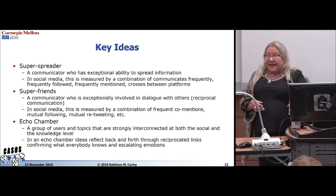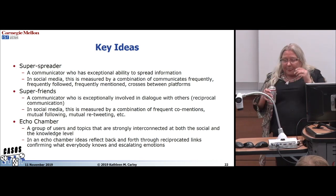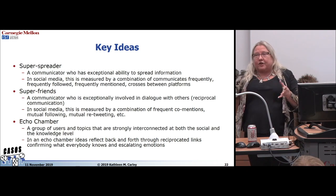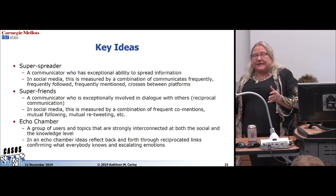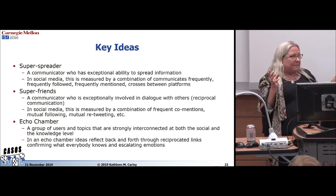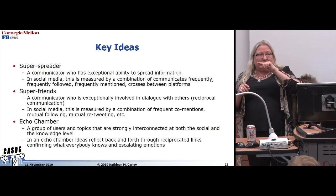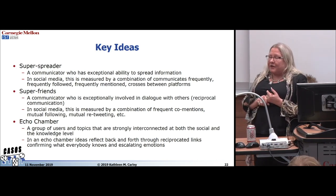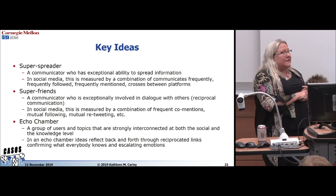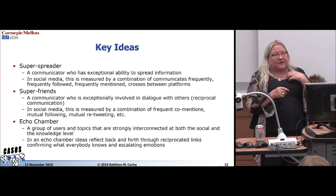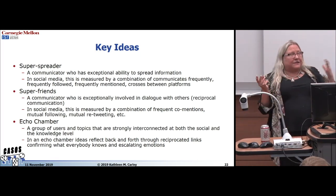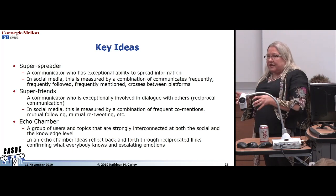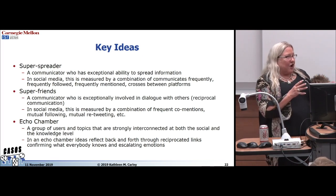One key idea you need to understand this space is a super spreader: an individual or actor with a disproportionate ability to get their message out. That doesn't mean people agree with them or like them — it just means their message will somehow get into your feed. Super spreaders are very important because you can't agree with something until you've at least read it. A super friend, by contrast, is an individual engaged in a high number of reciprocal relationships — I tweet you, you retweet me. Super friends are very instrumental in shaping groups, discussions, and convincing groups to act in certain ways.